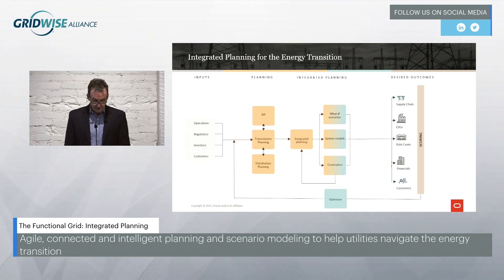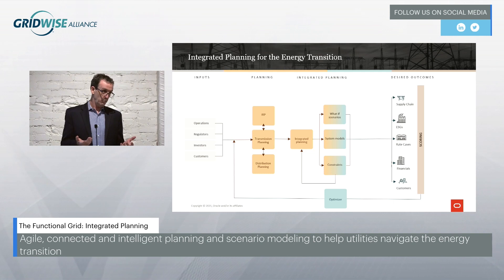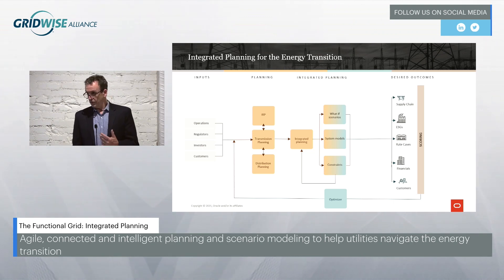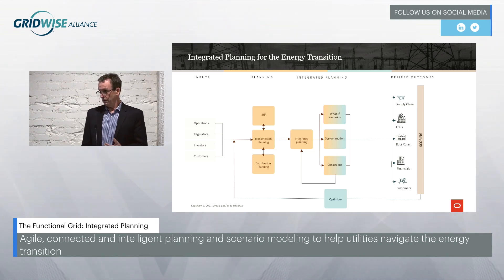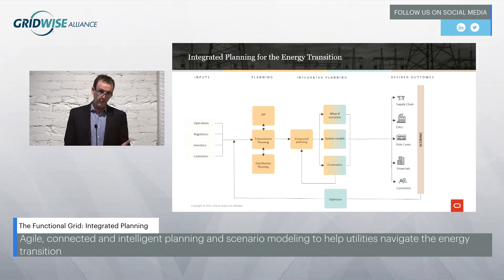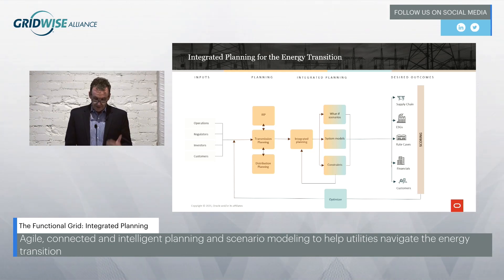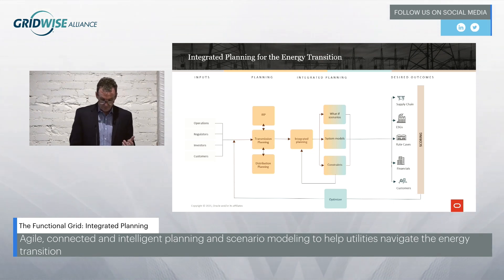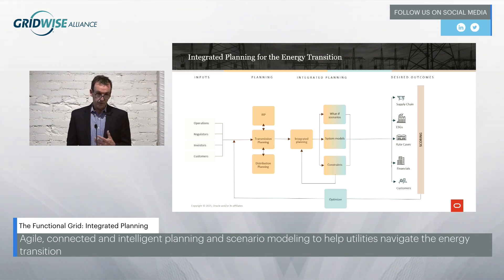Utility executives are working hard to keep up with the pace of change that's being forced on them, mostly from the outside, primarily because of decarbonization of the grid. This requires utilities to maintain the features and capabilities they've always had — safety, reliability, affordability — while at the same time becoming agile businesses that can react optimally to a large and growing number of new constraints, threats, and challenges.